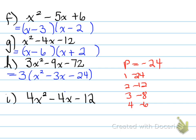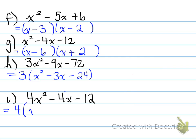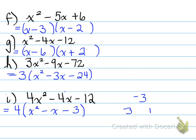Sometimes we can common factor and continue factoring like the next example, but in this case we have to stop here because there are no values that work for this situation — and it can happen. i: 4x squared minus 4x minus 12. We're going to take out 4, and we're left with x squared minus x minus 3. What two numbers multiply to give us negative 3 and add to give us negative 1? That would be negative 3 and positive 1 — oh wait, nope, that didn't work. There are no two numbers that multiply to give us negative 3 and add to give us negative 1. So we're done the question; we can't go any further.